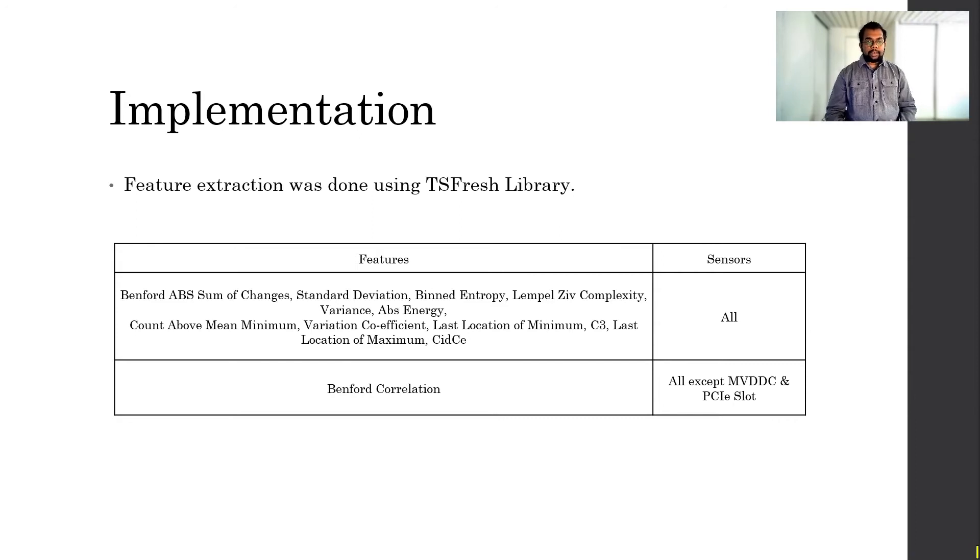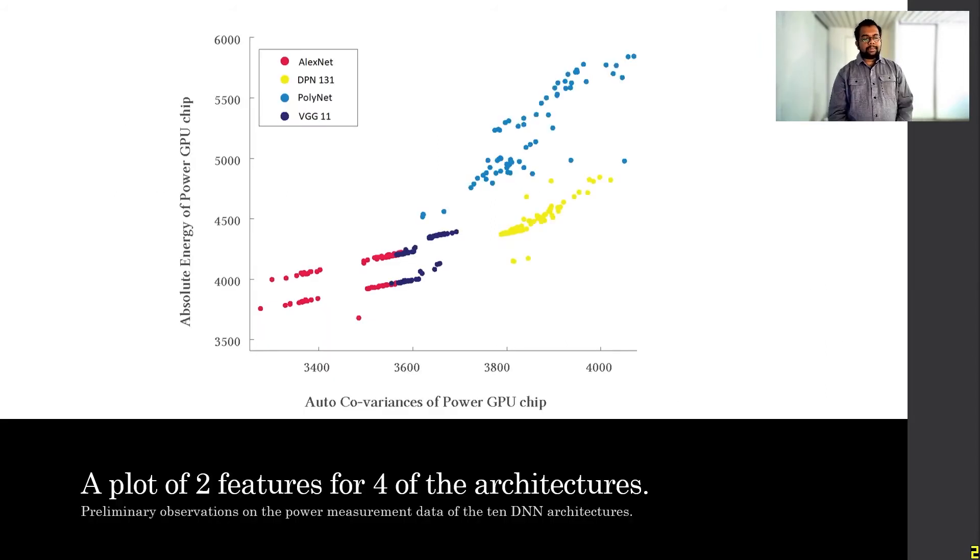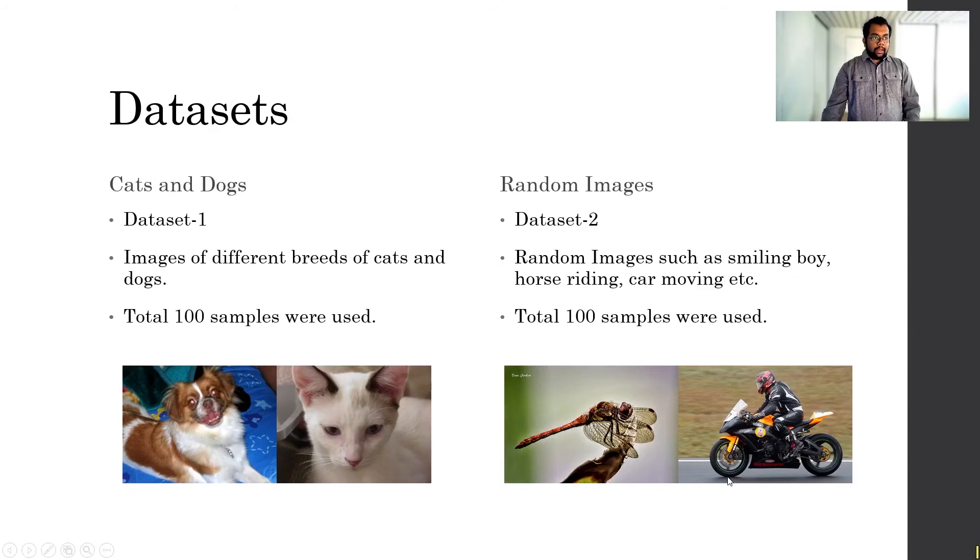We did some feature extraction on the power dataset. This feature extraction was done using the TS-Fresh library. These are the features that we extracted for all the sensors. Just the Benford correlation was done on all the sensors, except for NVDC and PCI Express slot. Here is a 2D plot of two features that have been extracted from the power data. These are auto-covariance of power GPU chip, and absolute energy of power GPU chip. We focused on four architectures here, just to show you the difference of how these architectures behave. We can see that the red mark is AlexNet, yellow is DPN, blue is PolyNet, and VGG is dark blue, or navy blue here.